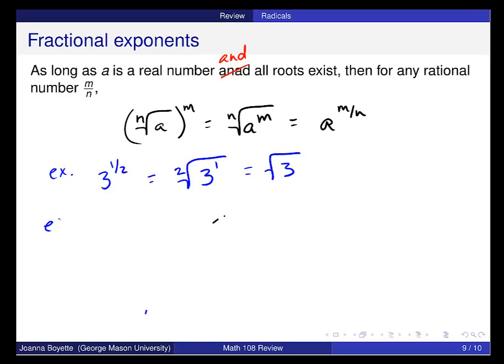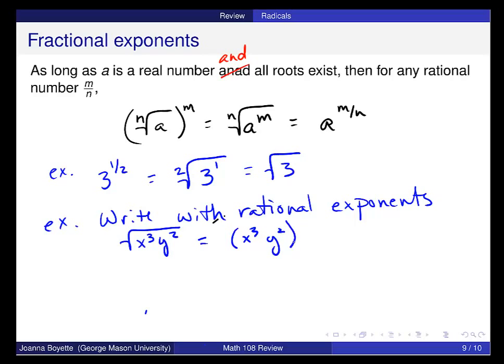I want to do one more example. Write with rational exponents. And that's the square root of x cubed y squared. That should be the same thing as x cubed y squared to the one-half power, and then I can use all of those rules I know from exponents to distribute this one-half, and then get x to the three-halves, y to the first power.